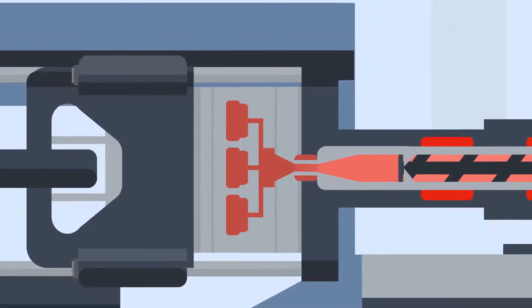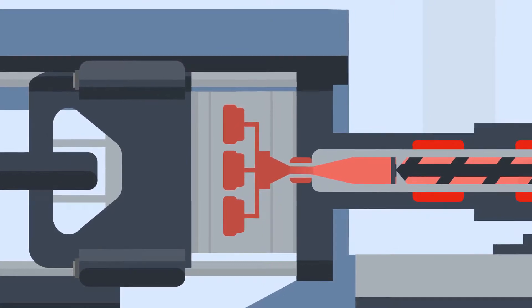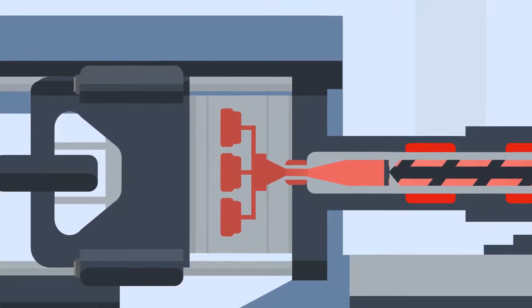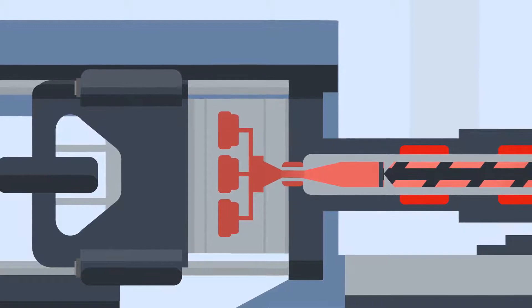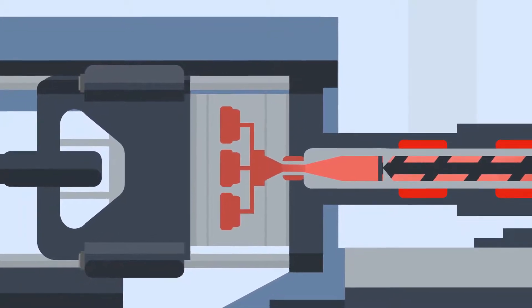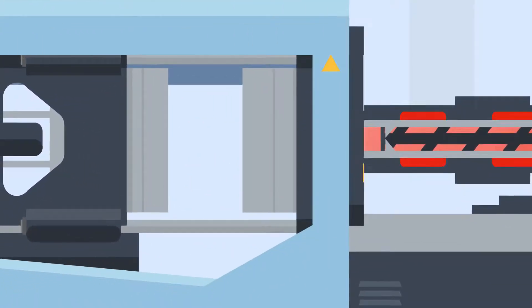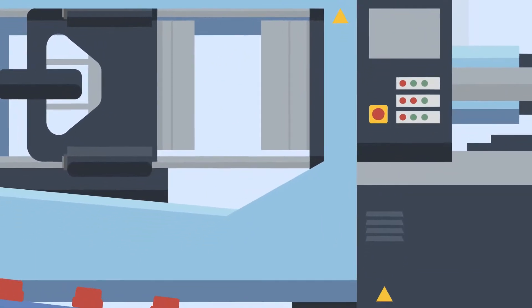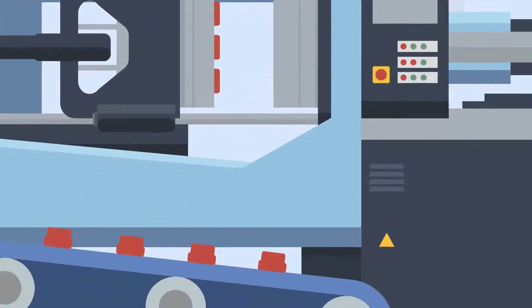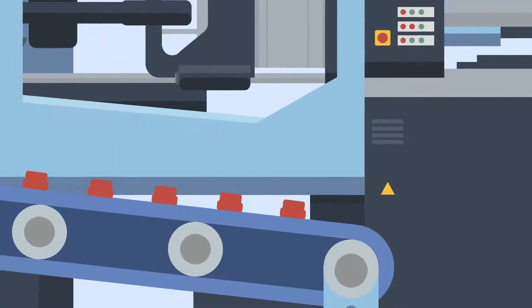After a set holding time, the screw will screw back to its set point. This happens at the same time as the cooling phase of the cycle. Once the set cooling time has passed, the mold opens and ejector pins or plates push the new parts out of the tool. These then fall onto a conveyor belt ready to be finished and packed.